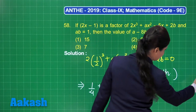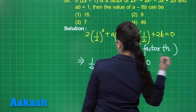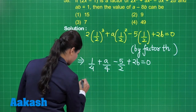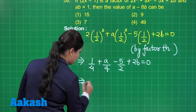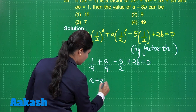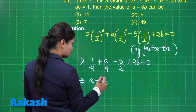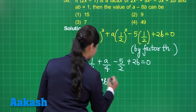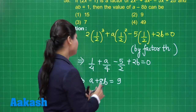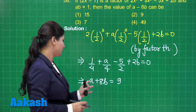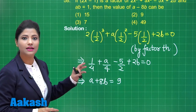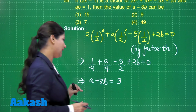Simplifying this equation, the result is a plus 8b equal to 9.